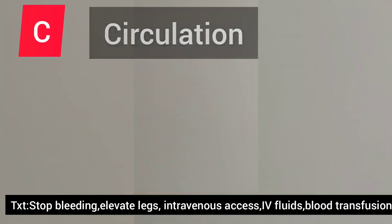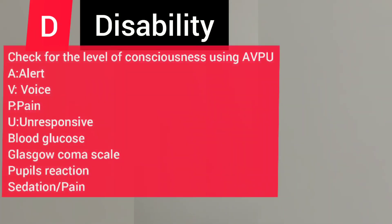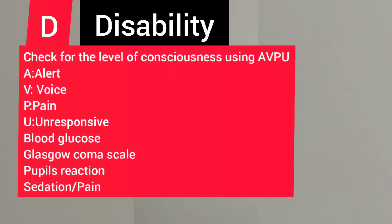D stands for Disability. At this point you are checking the level of consciousness of the patient using AVPU. AVPU stands for: A for Alert, V for Voice, P for Pain, and U for Unresponsive. Check if the patient is awake and alert, whether the patient responds to verbal stimulation, whether the patient responds to pain, and whether the patient is unresponsive.